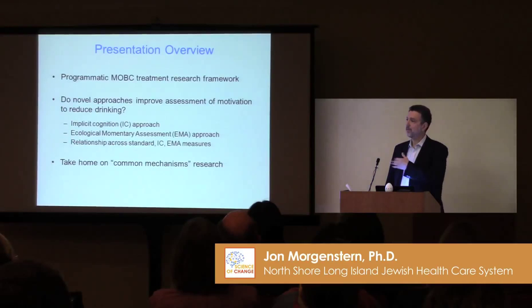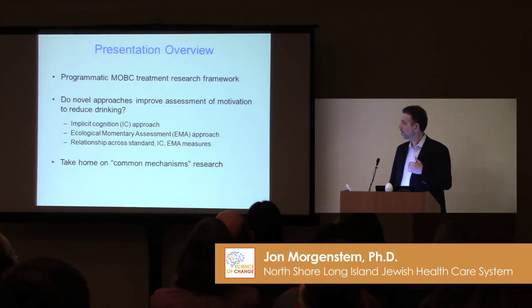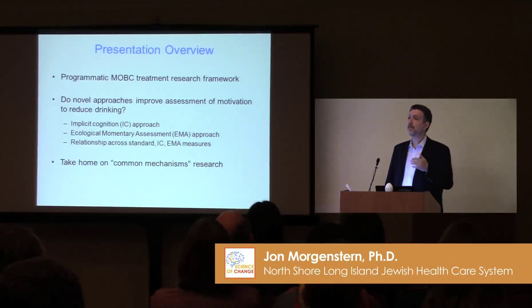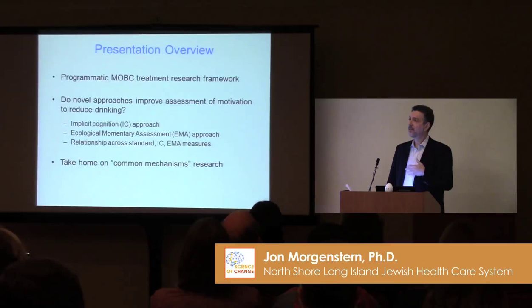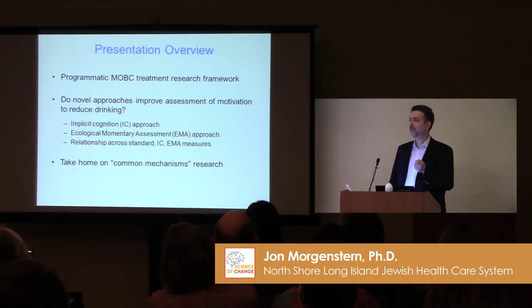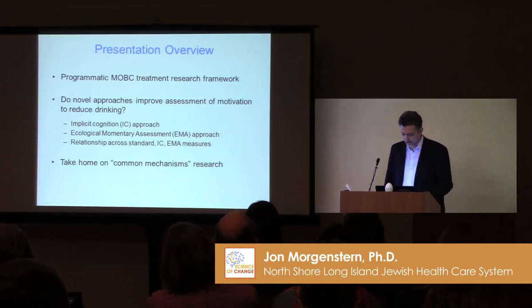Can we do better using these novel approaches? We're going to look at implicit cognitions and an ecological momentary assessment approach, and then compare across standard EMA and IC measures. We won't be showing neuroimaging data today. We have neuroimaging data, but a lot of the early neuroimaging data we collected we didn't find to be actually that useful. We went back to taking a more iterative approach to figure out what we want to test as a target, and designing measures that we think will test that target. Designing an implicit cognition test you think is valid and targets something is often a pre-step to actually doing the neuroimaging.